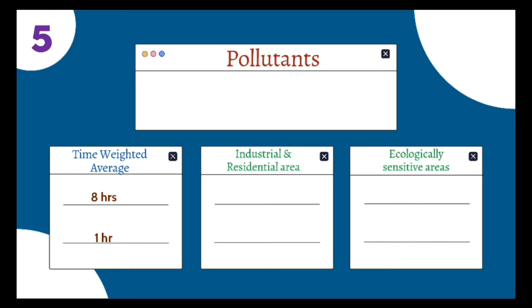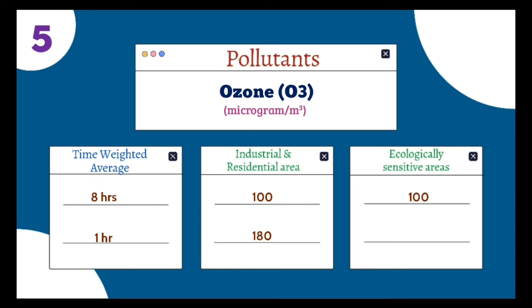The fifth pollutant is ozone (O₃), and its unit is also micrograms per meter cube. In industrial and residential areas, the 8-hour value should not exceed 100 µg/m³, and the 1-hour value should not exceed 180 µg/m³. In ecologically sensitive areas, the 8-hour value should not exceed 100 µg/m³, and the 1-hour value should not exceed 180 µg/m³.